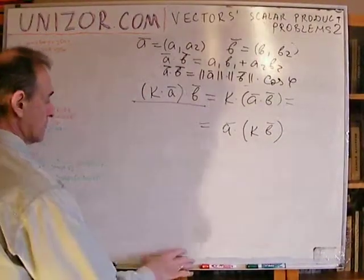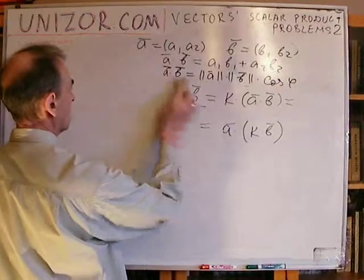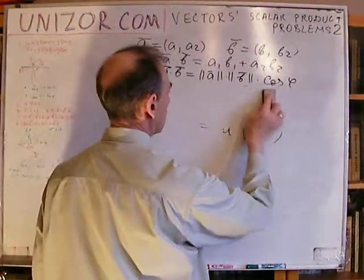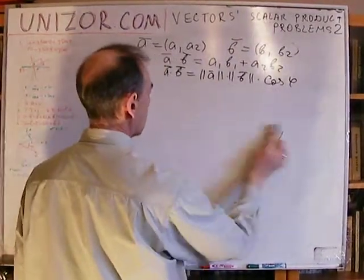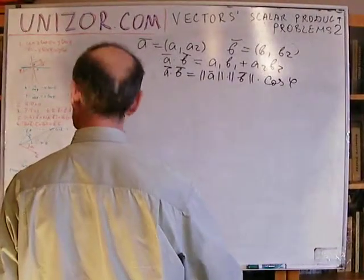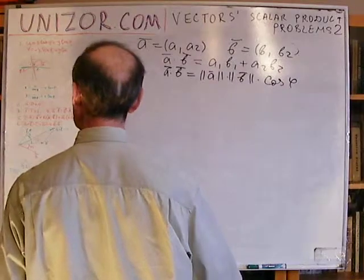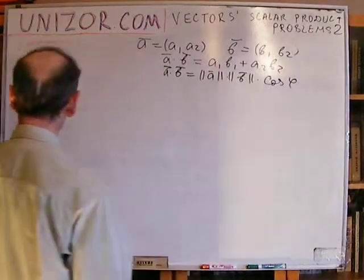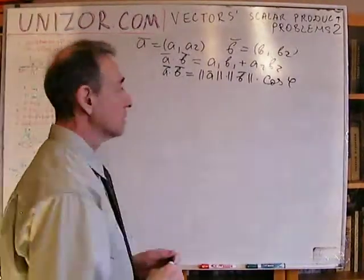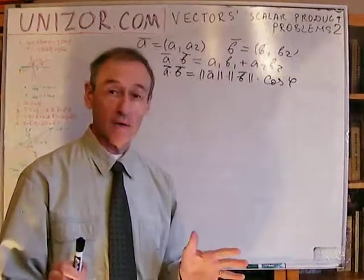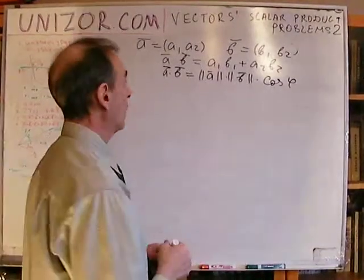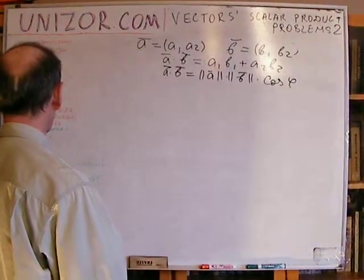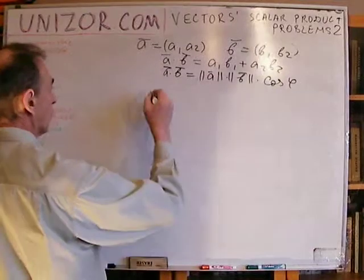That covers the associative law relative to multiplication by a constant. Now the last property is a little more involved — the distributive law.